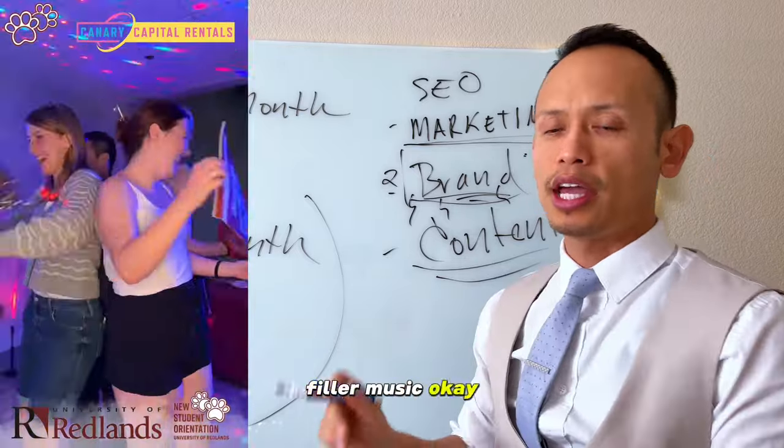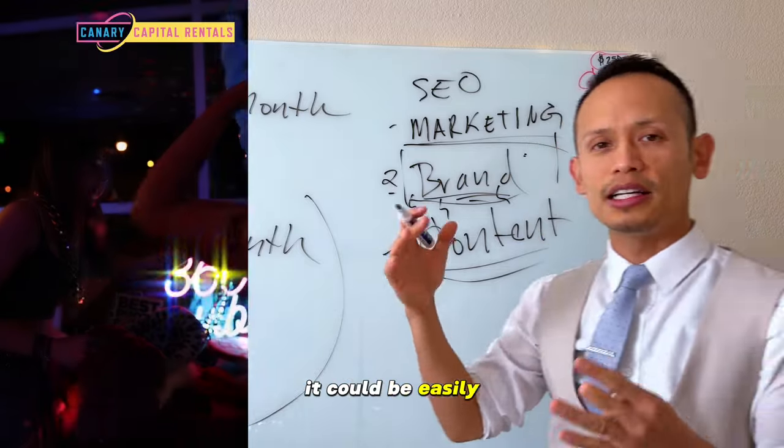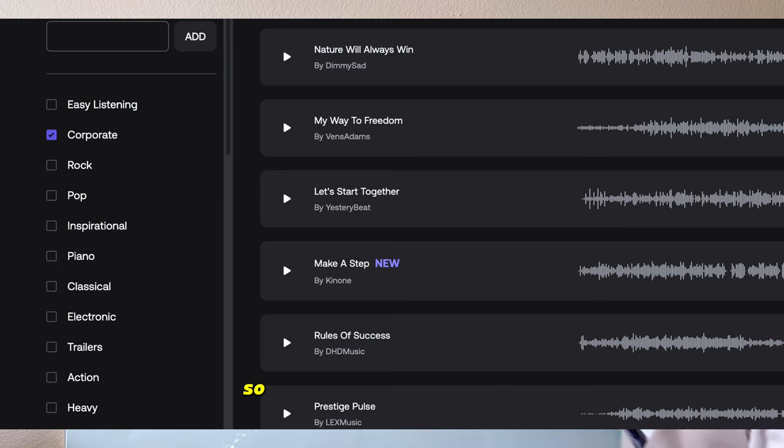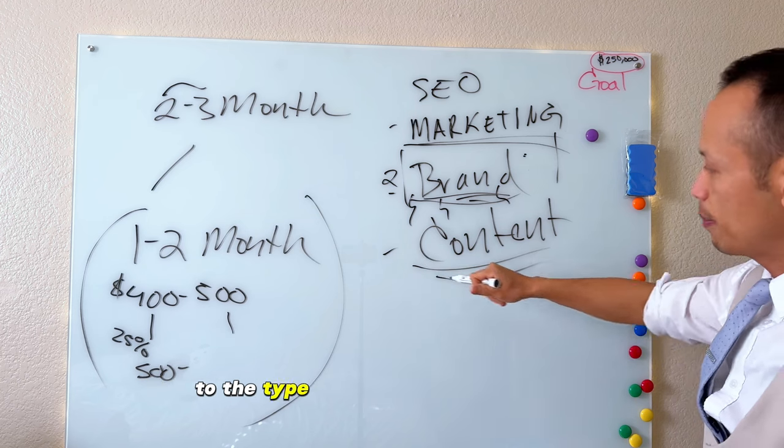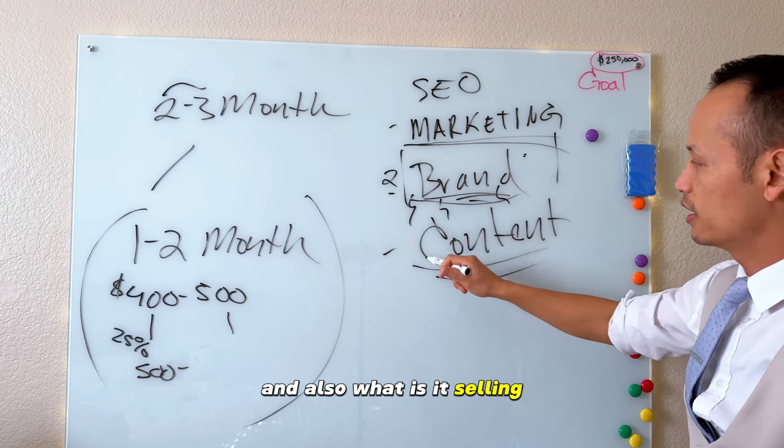It could be hip-hop music for a certain event. It could be easy listening music that sounds more like a corporate background music. So everything ties into it from the actual audio tracks that you are using to the type of video that you are using. And also, what is it selling? What is your content?